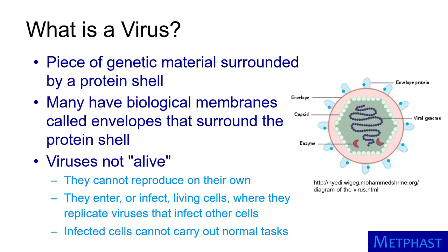The viruses use the genetic material in the cells to copy themselves, replicating additional viruses that go on to infect other cells. A specific type of virus can generally infect only cells from a single animal or plant species or a group of related species. The infected cells cannot carry out normal tasks, and they eventually die.